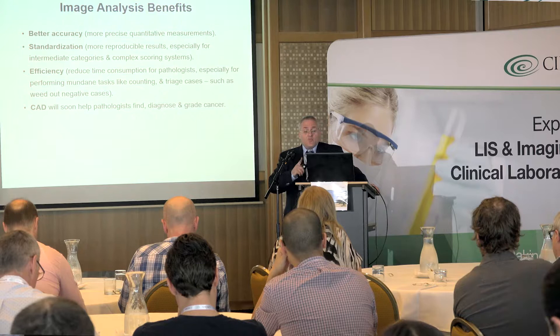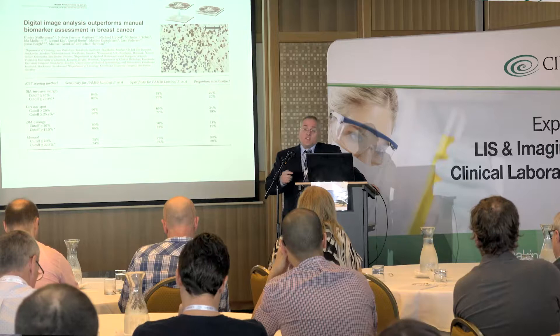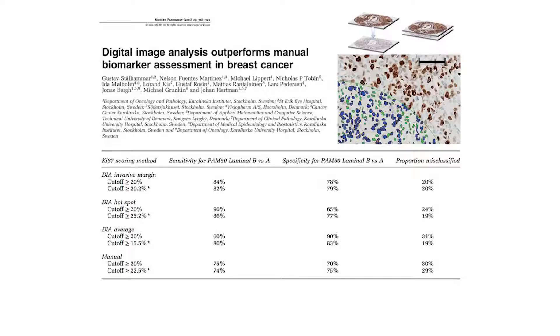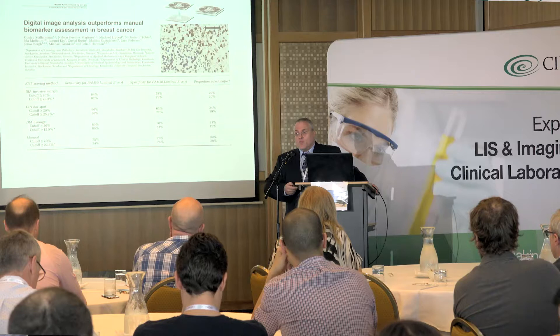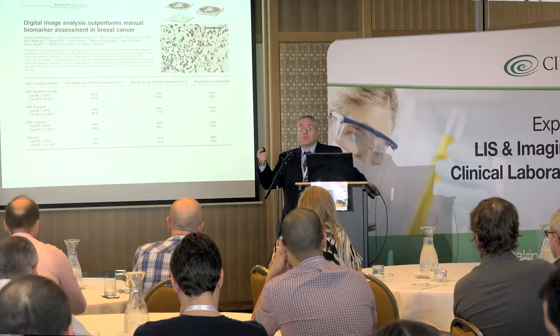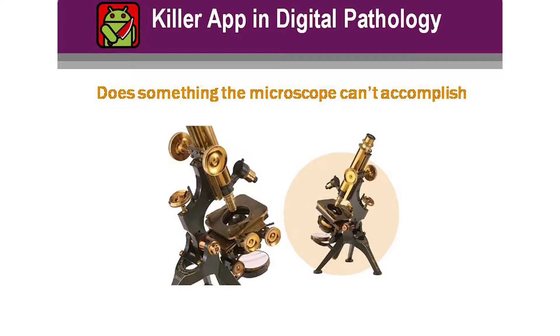We're seeing a few of these algorithms out there, and computer-aided diagnosis will soon help pathologists diagnose and grade cancer. A paper published in Modern Pathology using VisioPharm software with several pathologists around Europe showed that computer-aided diagnosis outperforms pathologists — maybe not by leaps and bounds, but certainly enough to change someone's chemotherapy decision. It's not Hollywood fiction.